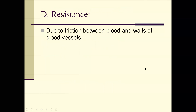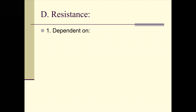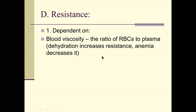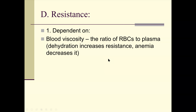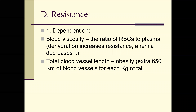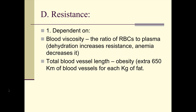Resistance is friction between the blood and walls of blood vessels — ideally smooth with a single layer of squamous epithelium. Blood viscosity: more red blood cells, or being dehydrated, increases resistance. Anemia is the opposite. One of the Chapter 19 activities looks at blood vessel length and blood flow; the other looks at the radius and blood flow. If you're obese, you have an extra 650 kilometers of blood vessels for each kilogram of fat.